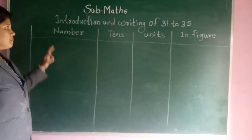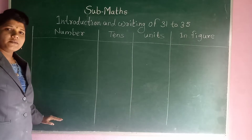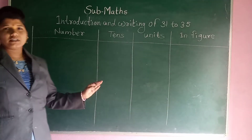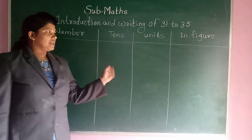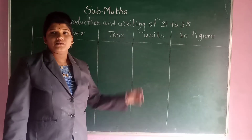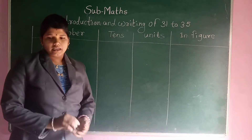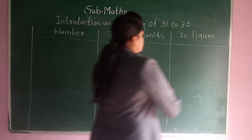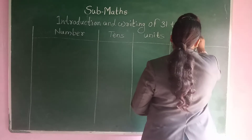31 to 35 numbers — we need to write the tens and units, and also write the spelling in word form.